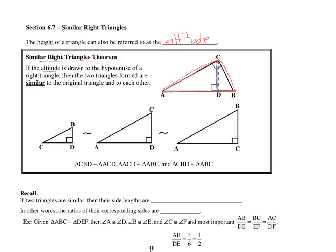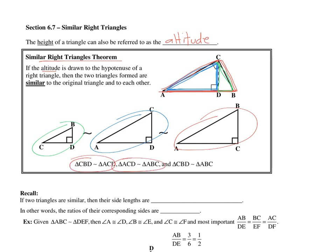You have this red triangle that we originally started with, then what I like to call the medium triangle, and then the small triangle. They're all similar to each other. Here's the red one, the blue one, and the green one. I've just reordered them so they're in the same position, and now we can see how they're all similar. We have these three similarity statements.